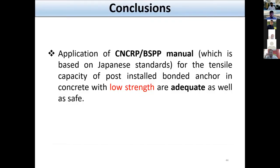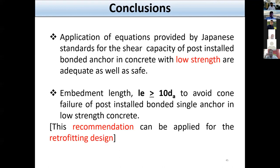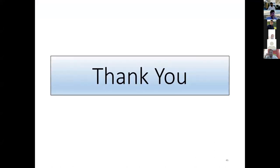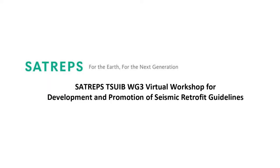In conclusion, the current CNCRP BSPP manual can be used for designing the tensile capacity of post-installed bonded anchors in low-strength concrete, and it is adequate and safe. The Japanese standard can also be used to design the shear capacity. Additionally, keeping the embedment length equal to or greater than 10 times the anchor diameter is recommended, and this recommendation can be applied in retrofitting design. Thank you.